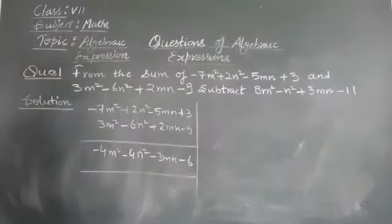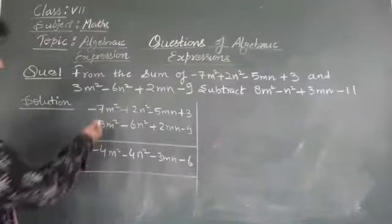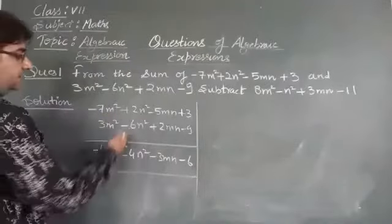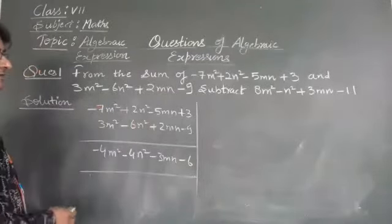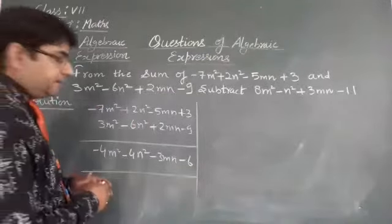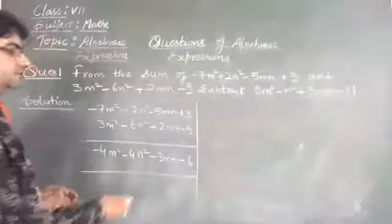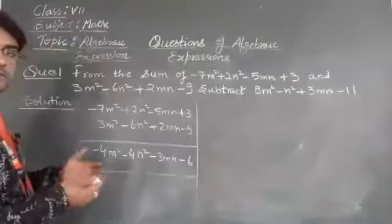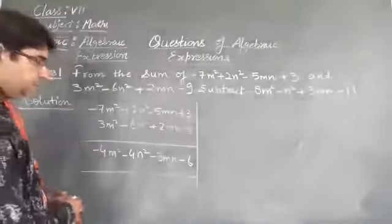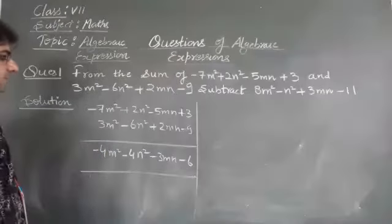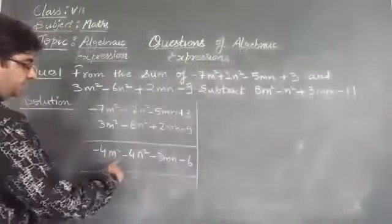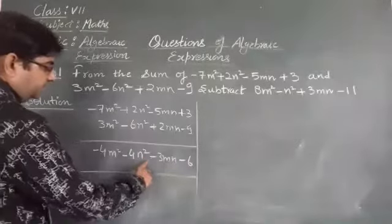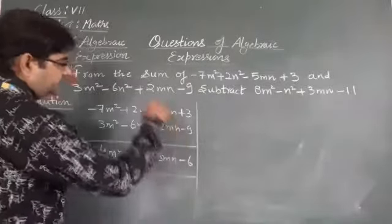Just see the terms — one is positive, one is negative. We will subtract the terms and the sign will be of the greater number. So we will get the sum: minus 4n square minus 4n square minus 3mn minus 6.